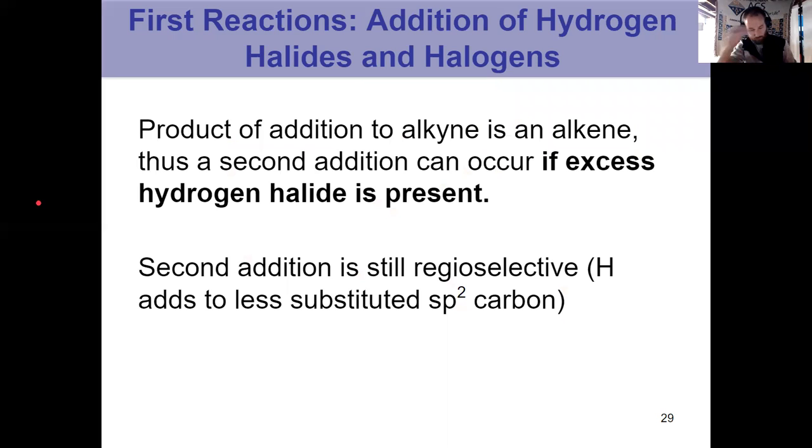So now we get into the reactions. Addition of hydrogen halides first and then halogens. Both of these reactions are regioselective. We've got to think about do we have a terminal alkyne or an internal alkyne? And because I have two pi bonds, if you have excess of the other reagent, you can do two additions and we maintain that regioselectivity.